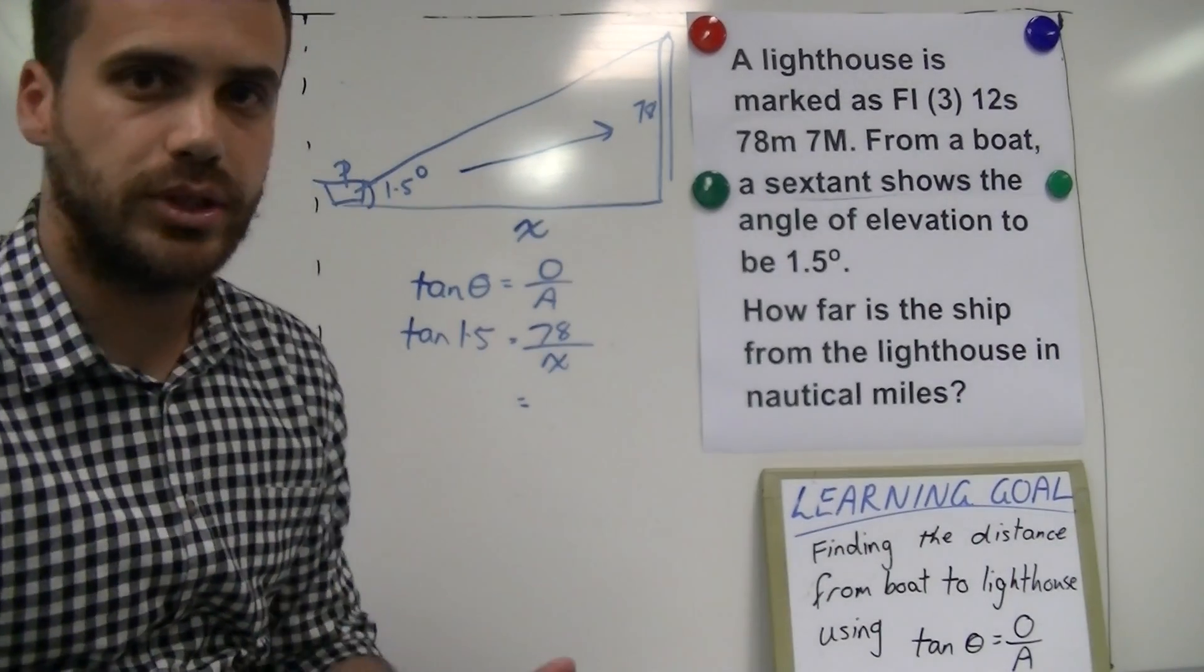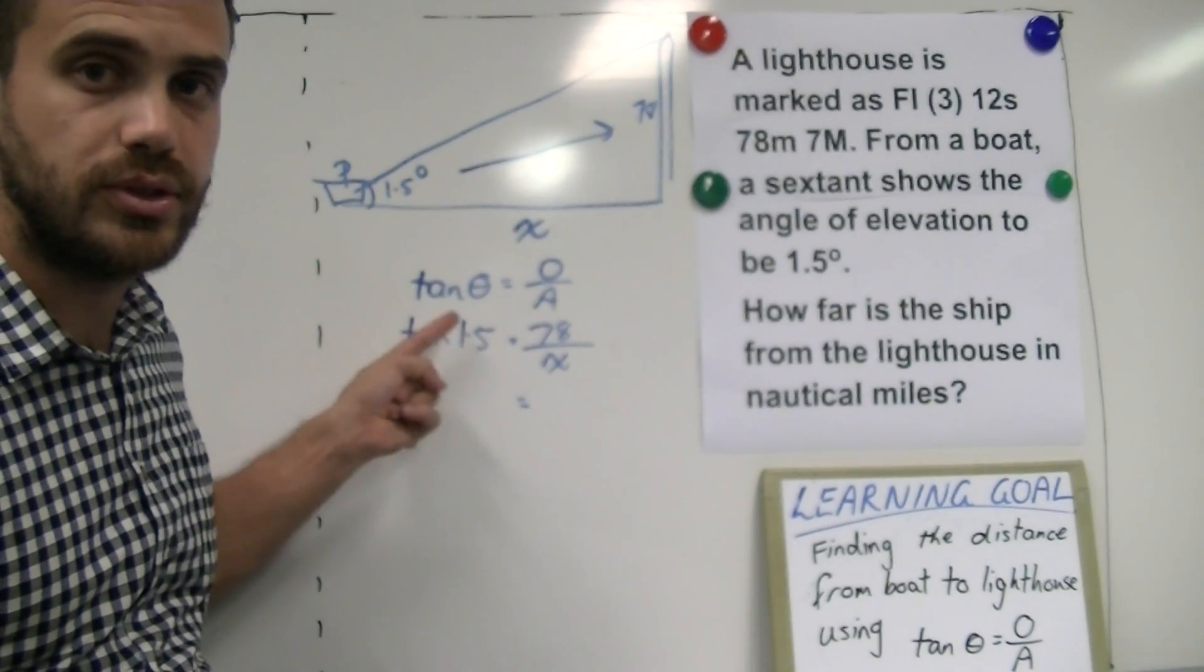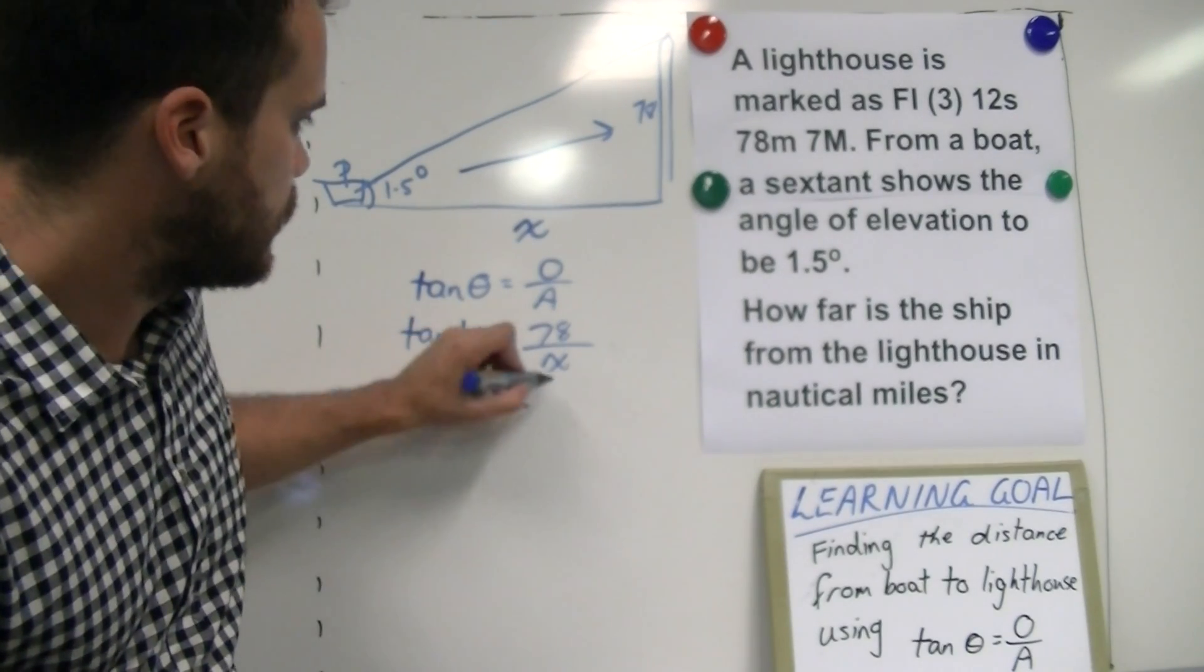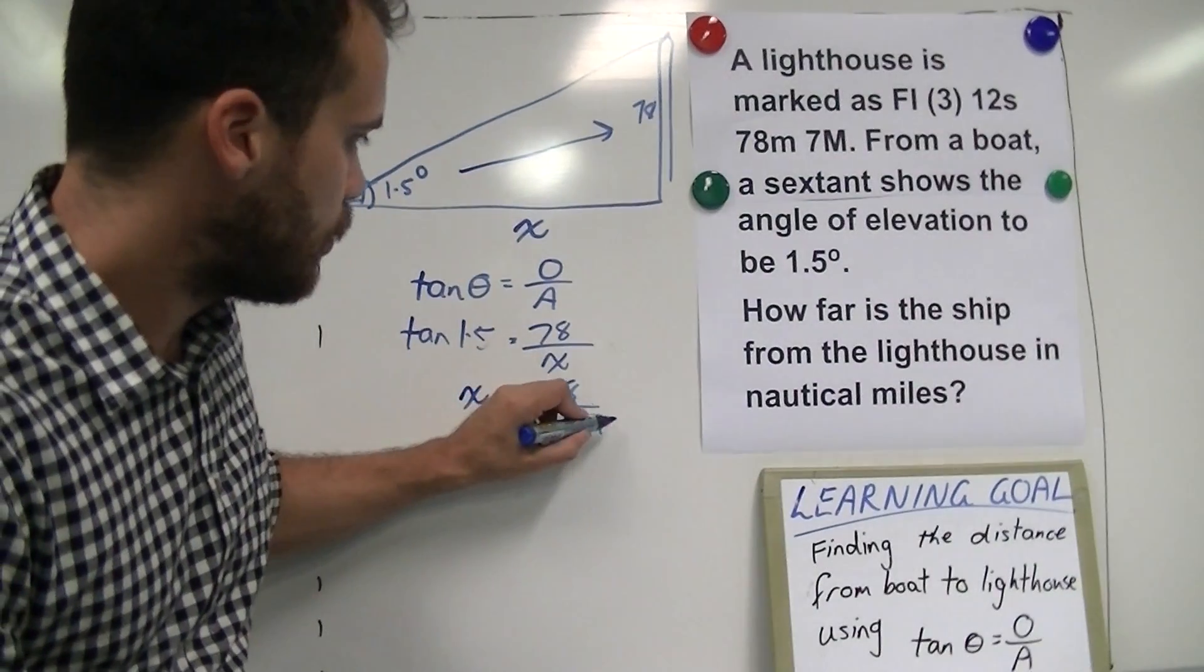Now when you get a situation like this where x is on the bottom, don't forget you can take that x and move to the top here and move tan 1.5 down. So it's going to be x tan 1.5.